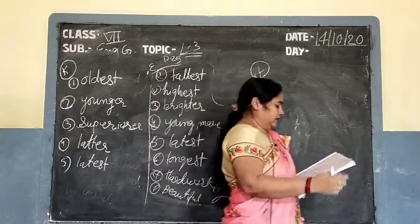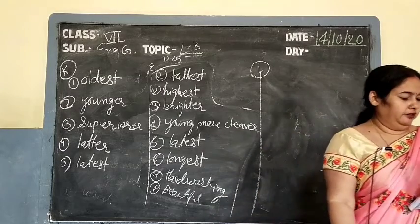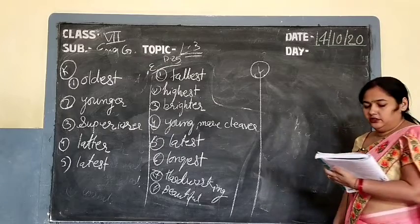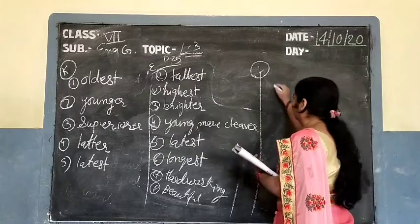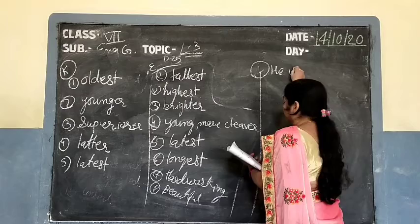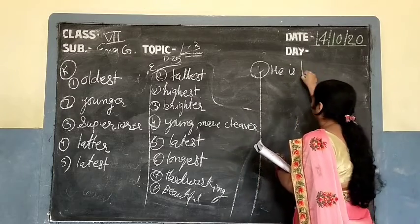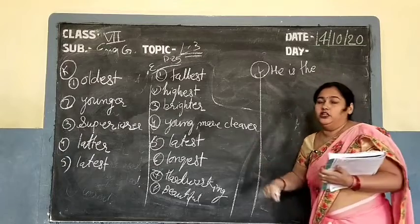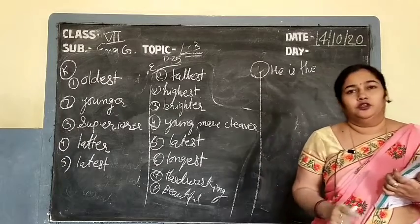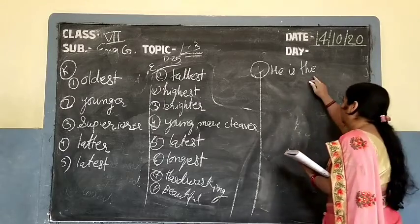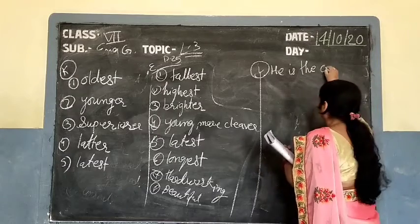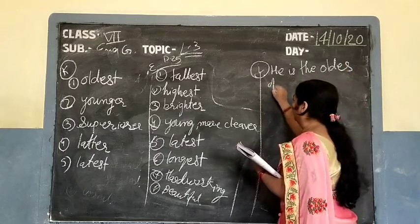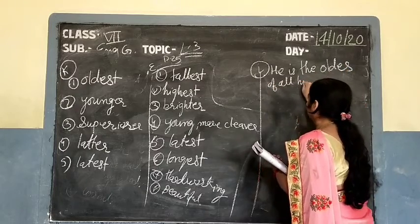Exercise l — correct the following sentences. Number 1: She is the most prettiest girl — correction: she is the prettiest girl. Number 2: He is older of all his brothers — here we are comparing among all brothers, so it becomes superlative degree: he is the oldest of all his brothers.